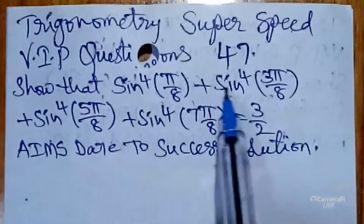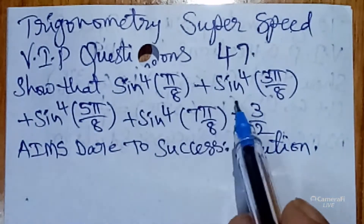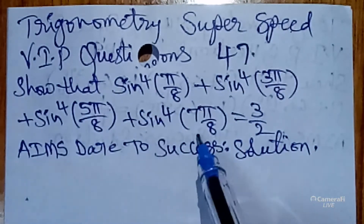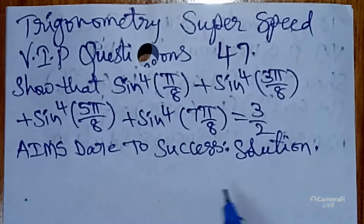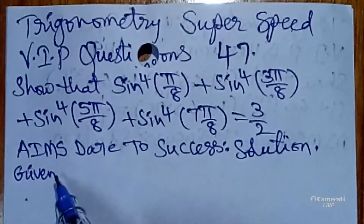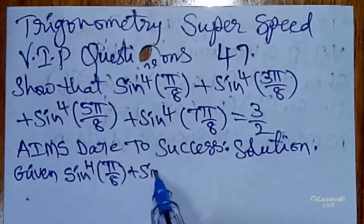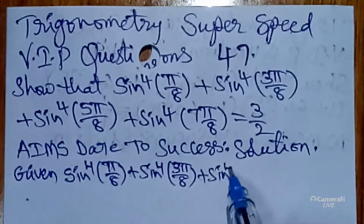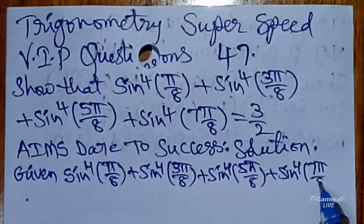So, technology super speed VIP questions, part 47. Show that sin⁴(π/8) + sin⁴(3π/8) + sin⁴(5π/8) + sin⁴(7π/8) = 3/2. Please listen carefully. AIMS — straight to success. Solution: I want to take the given LHS value, which is sin⁴(π/8) + sin⁴(3π/8) + sin⁴(5π/8) + sin⁴(7π/8).